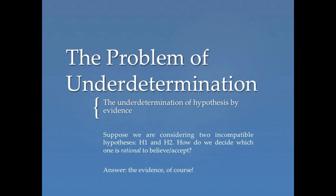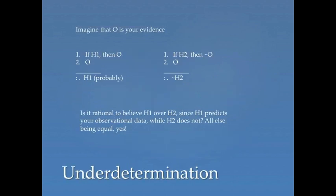Perhaps the evidence will tell us that H1 is more plausible than H2, in which case we should pick H1 over H2. For example, imagine O is your evidence. Using the hypothetico-deductive method of confirmation, suppose that H1 predicts O and it turns out that O is the case — so H1 is confirmed by O. But if H2 predicts the very opposite, then O disconfirms H2. So it's rational to believe H1 over H2.